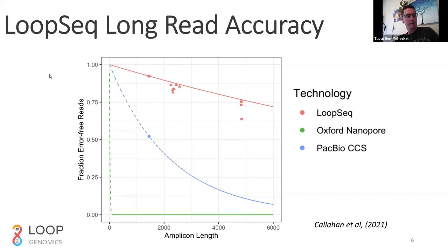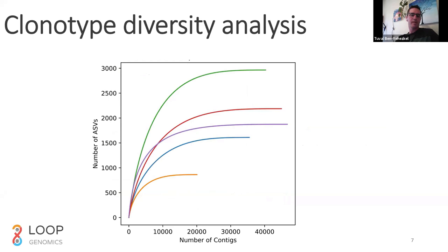The reason this is important for immune repertoire sequencing is because you want to be able to trust your data — you want to be able to trust that the mutations and variants you're seeing in antibodies are actually real sequence and not false positive results.